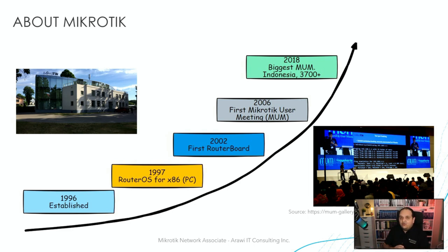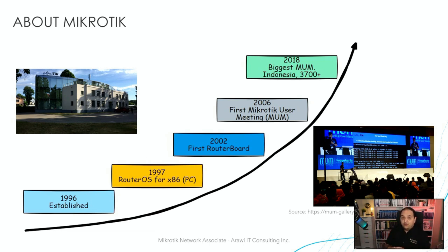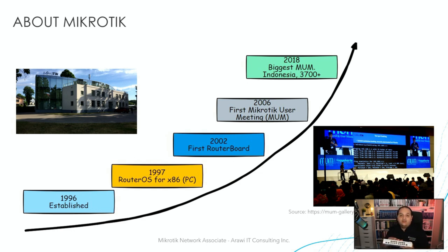Obviously the limit is going to be the hardware capabilities, but we don't need to be paying for subscriptions to use a particular feature. We can simply get RouterOS and we are free to use all the features if the hardware supports that functionality. So the product from MikroTik is a router board — the combination between the hardware and RouterOS, an operating system created by MikroTik based on Linux.